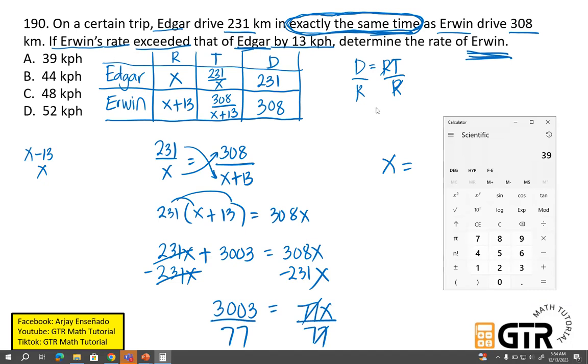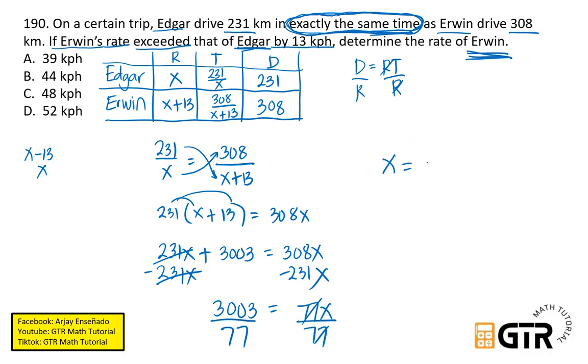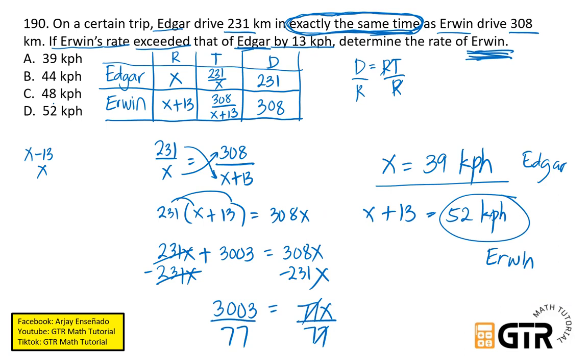Tandaan, rate ni Edgar ang 39. So rate ni Edgar ay 39 kph. Ang hinahanap natin ay Erwin. So ito ay kay Edgar. Ang rate ni Erwin ay x plus 13. So therefore, x plus 13 is 39 plus 13. So that is equal to 52 kph. So ito na yung magiging rate ni Erwin. So the correct answer is 52. So baka ma-excite. Ang naging answer ay 39 dahil nasa choices, 39. Rate yun ni Edgar. Ang hinahanap natin ay rate ni Erwin.